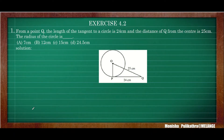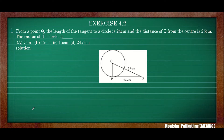Exercise 4.2, first question: From a point Q, the length of the tangent to a circle is 24 cm. In the diagram, from point Q, the tangent is PQ. The length of the tangent PQ is 24 cm and the distance from the center O to Q is 25 cm. We need to find out the radius OP.